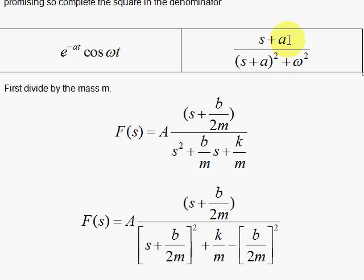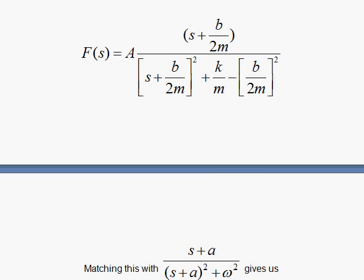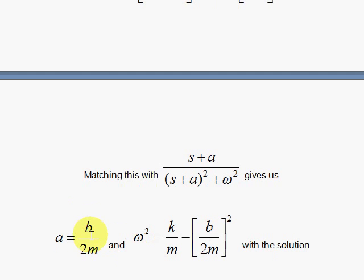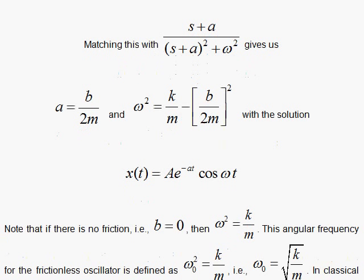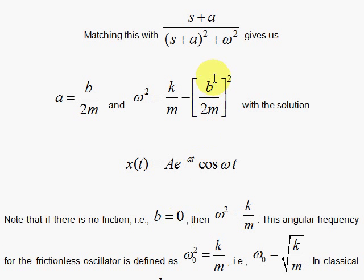So let's remember that: a is b over 2m, and omega squared is k over m minus (b over 2m) squared that I had to subtract. And then I have my solution. We're going to make these parameters look cleaner as they do in physics class. In physics class, if there's no friction — if b equals 0 — then omega squared is simply k over m. They call that omega naught squared, so omega naught is the square root of k over m.